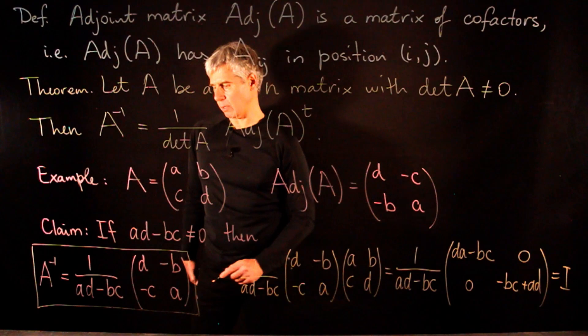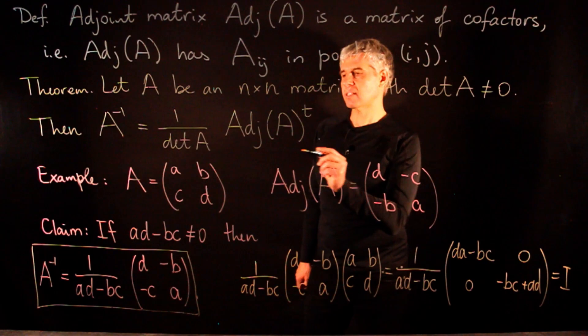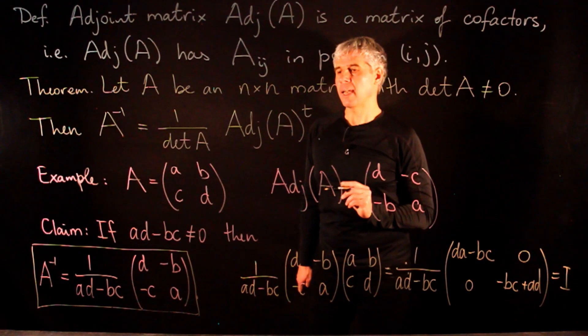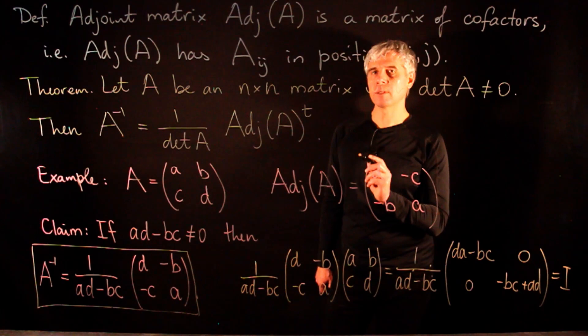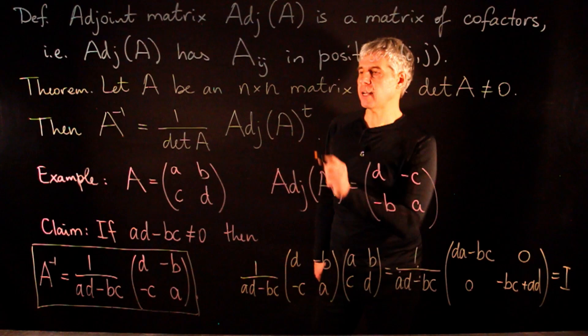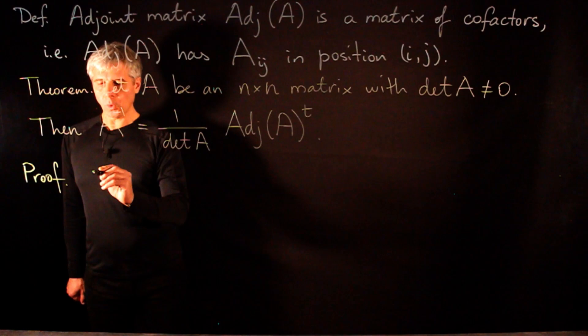For matrices of larger sizes, this formula for the inverse is not computationally efficient because we need to compute n squared cofactors, which is time consuming. For matrices of size 3 and more, it is better to use the method based on row reduction. Nonetheless, this formula has great theoretical value when we need to analyze A inverse. Let us give a proof of this formula.